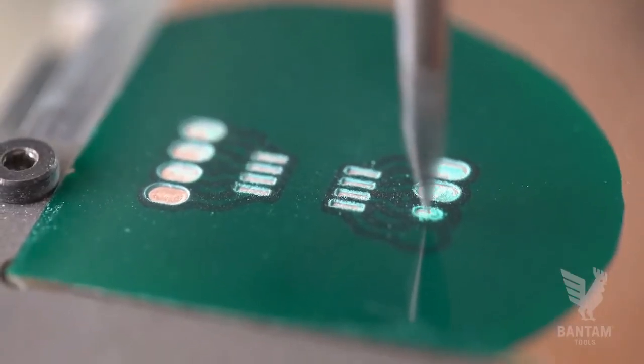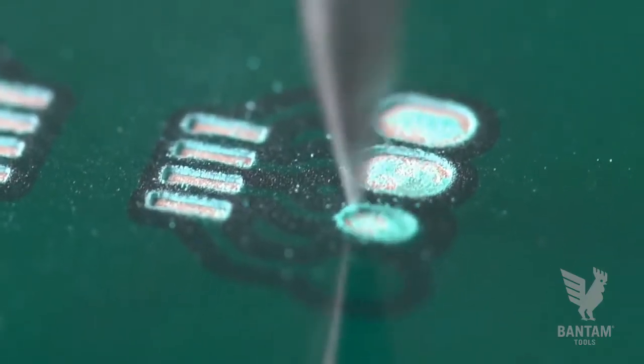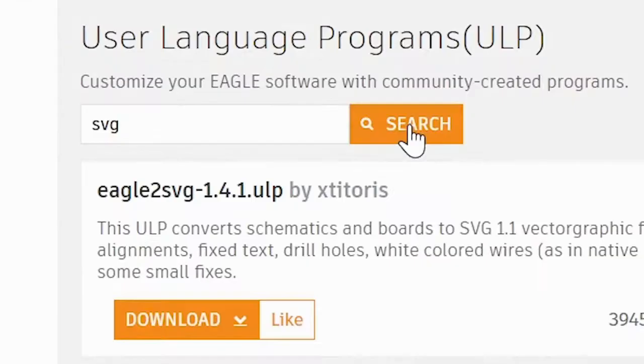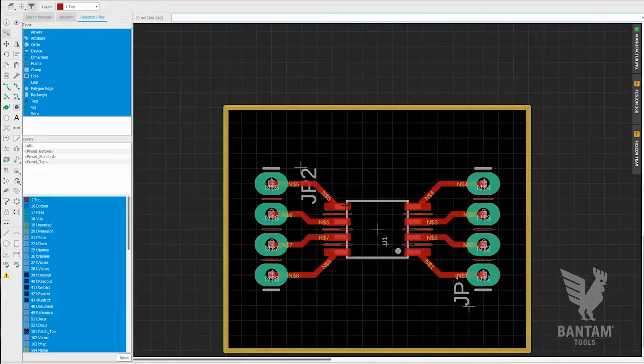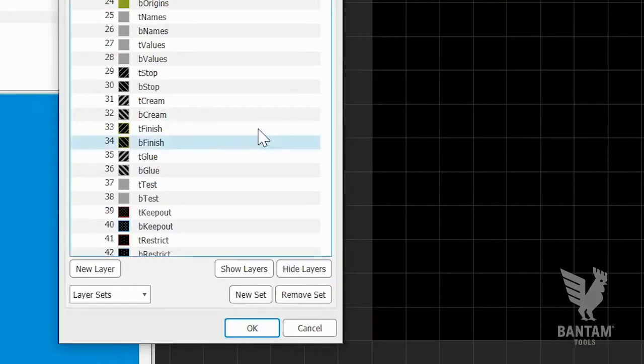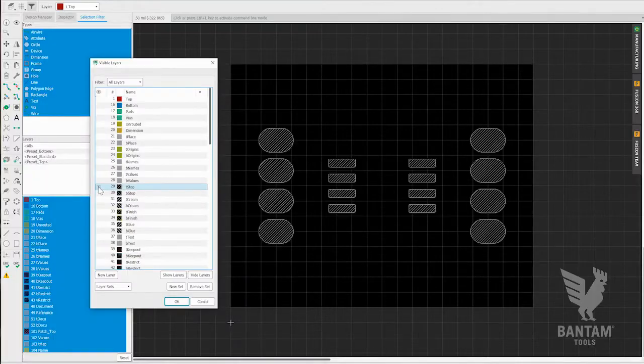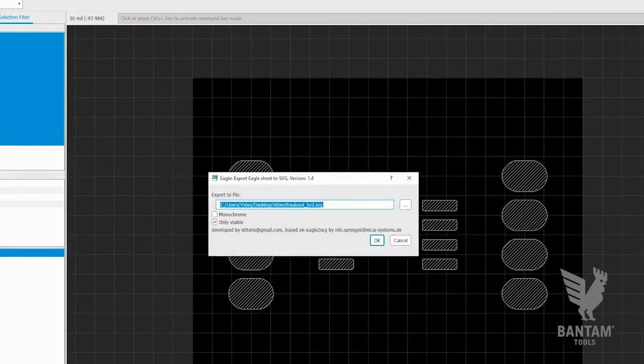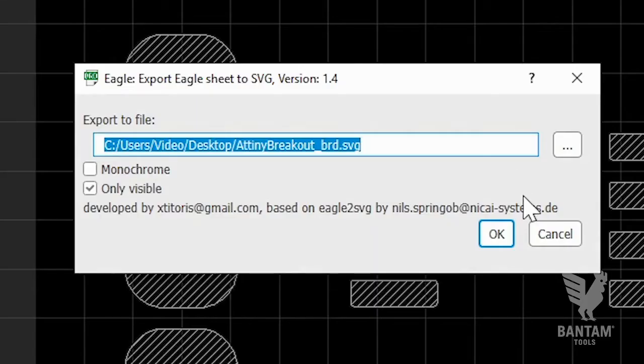We'll begin by creating an SVG file for the toolpaths to cut away the excess solder mask, exposing the pads. Download the Eagle to SVG ULP file available on the Eagle website. Load the board design in Eagle and isolate the t-stop layer so it's the only one visible. Then, using the command line, execute the ULP using the run command, followed by the ULP file location. Follow the prompts and you'll have an SVG in seconds.